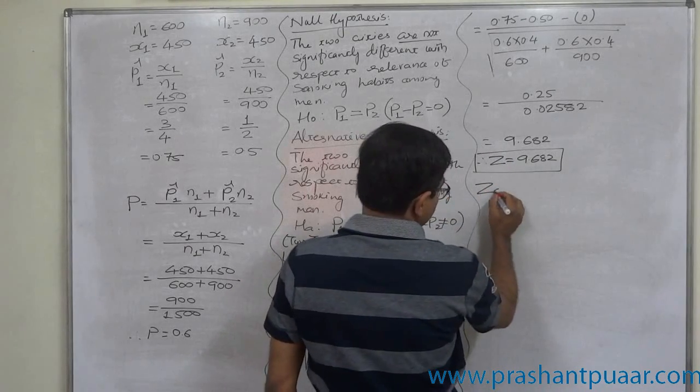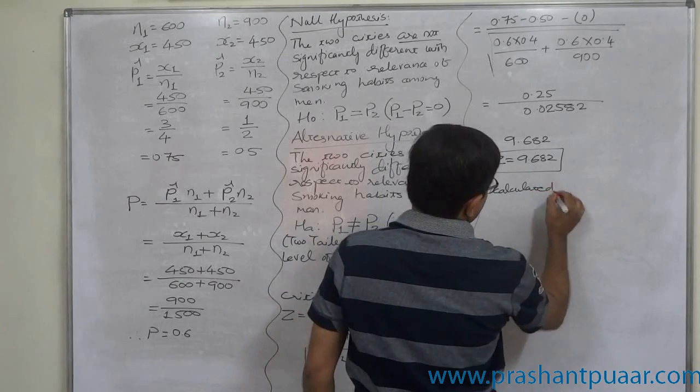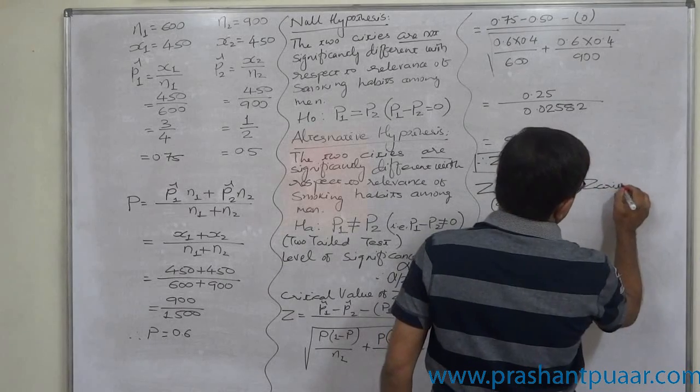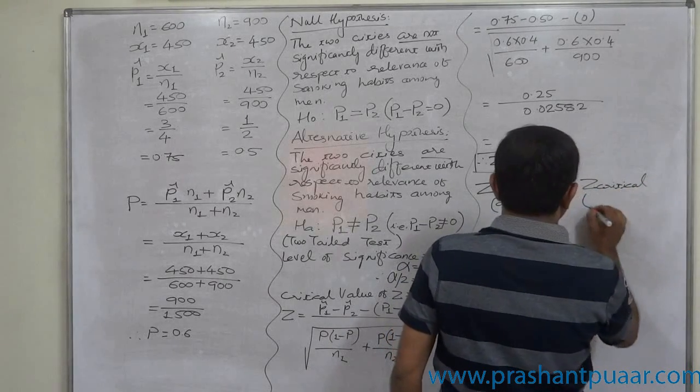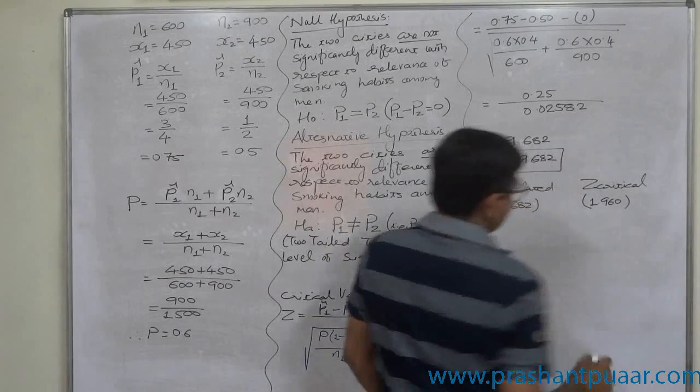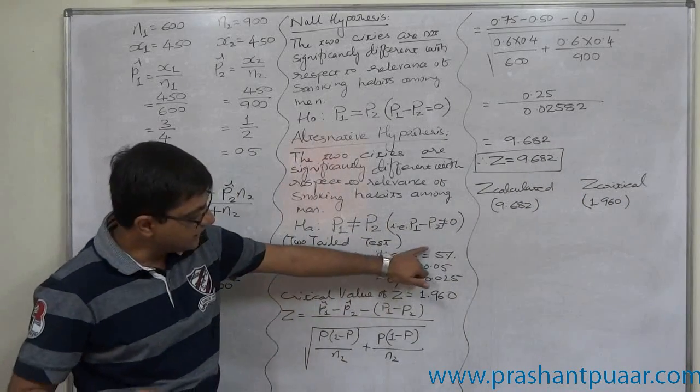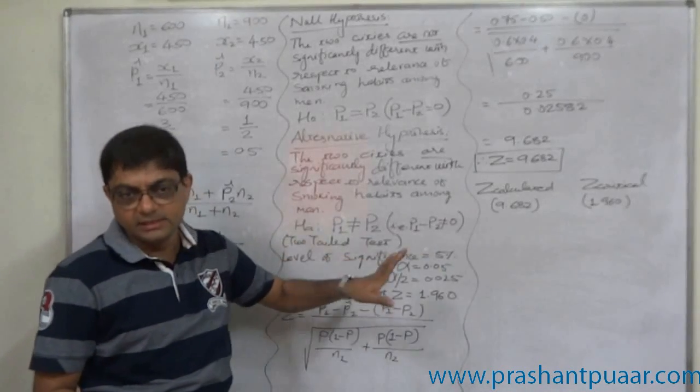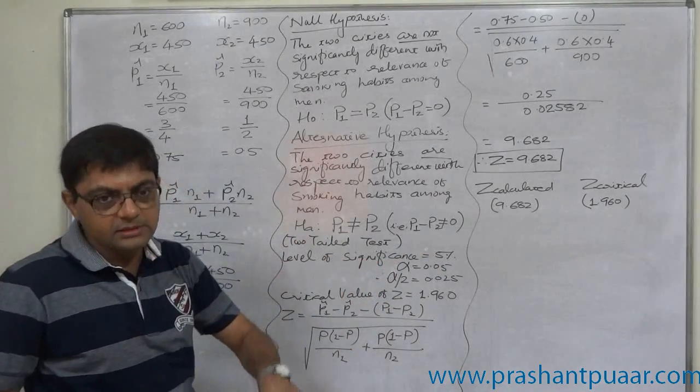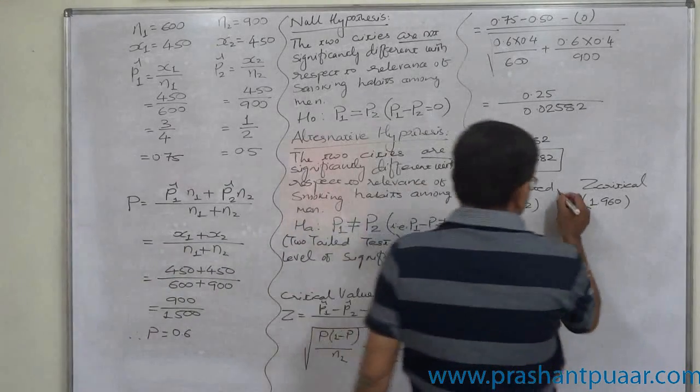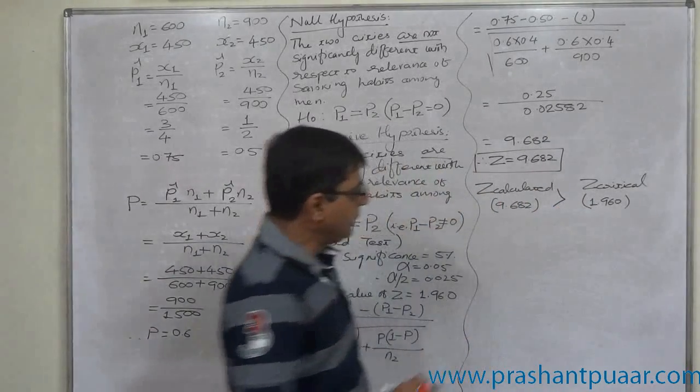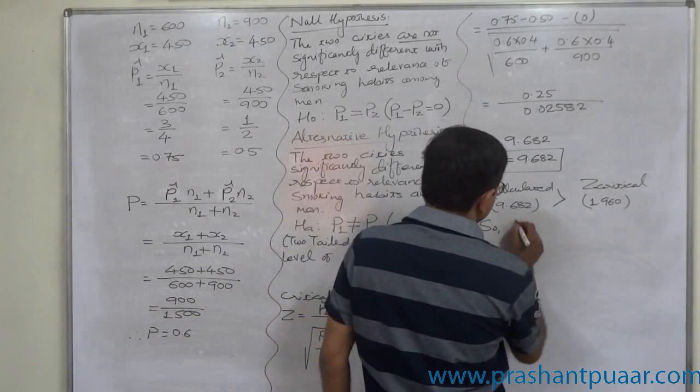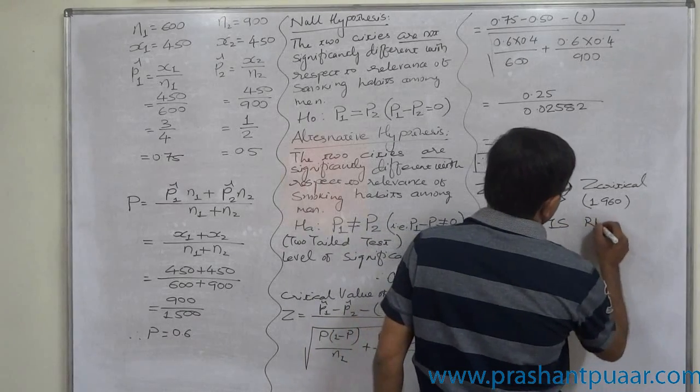Now comparison: Z calculated 9.682 and Z critical 1.960. It is not compulsory to take level of significance of 5 percent, you can take it 1 percent. It is upon the researcher what is his level of confidence as well as level of significance. The calculated value of Z is greater than the critical value, so the null hypothesis is rejected.